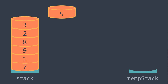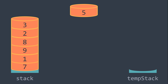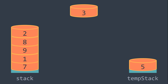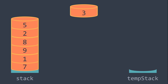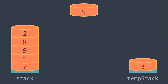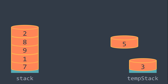For example, we pop from stack and we have value 5. The temporary stack is empty, so we directly push it in. Now we pop value 3: because the temporary stack peak is 5, which is greater, we pop it from there and push it into our stack. Then we push our value 3 into the temporary stack. We repeat the process: we pop value 5, and because it's not smaller than 3, we can directly push it.